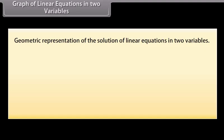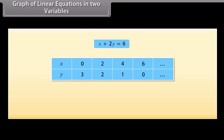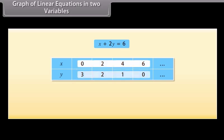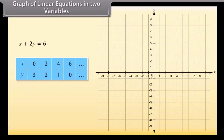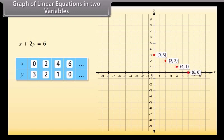Let us look at the geometric representation of the solutions of linear equations in two variables. The solutions of the given equation are expressed in a table showing values of X and Y. Let us plot these points on a graph paper. Taking X as 0 and Y as 3, this is the point obtained. Mark other points using these values. Now join any two points to obtain a line — joining (0, 3) and (4, 1) gives line AB. The other two points (2, 2) and (6, 0) also lie on line AB.